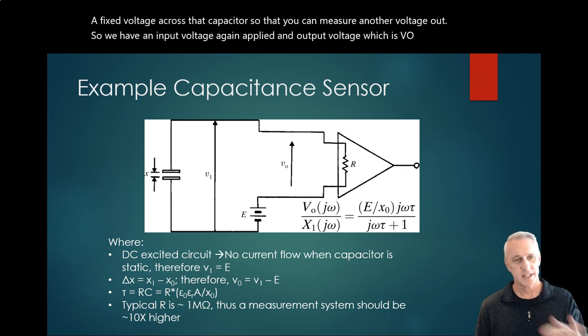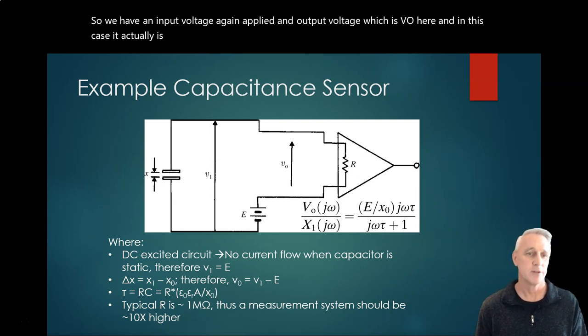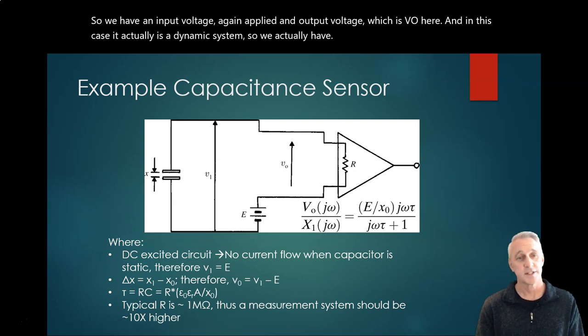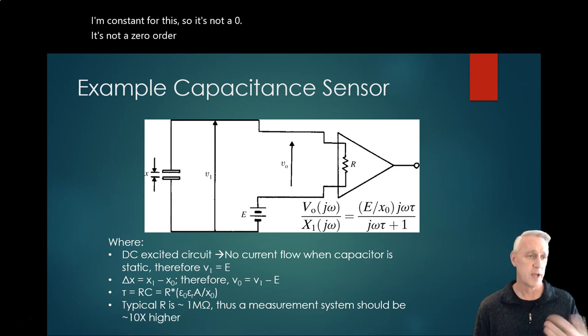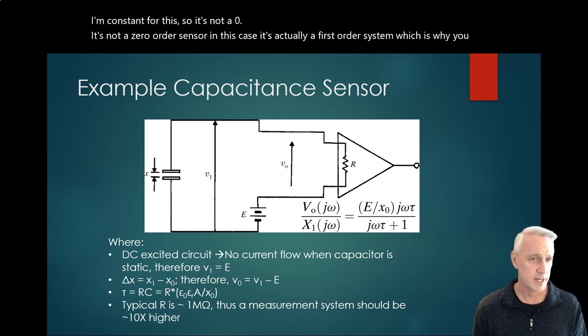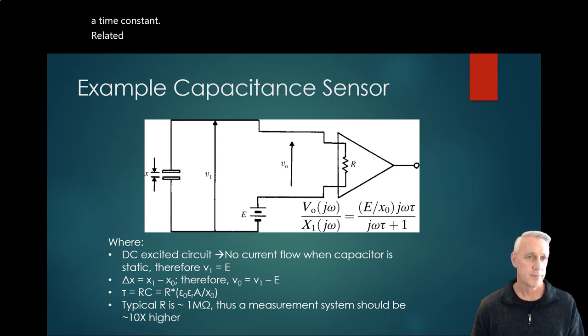In this case, that actually is a dynamic system, so we actually have a time constant for this. It's not a zero order sensor - it's actually a first order system, which is why I have a time constant related to the fixed resistance and the capacitance. So we actually get one of those time constants, so we see how reactive it is.